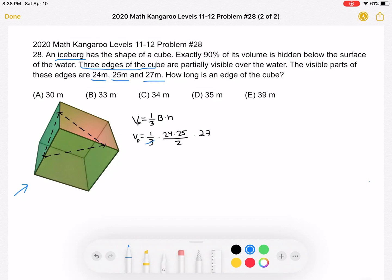So let's simplify. Divide by 2. So the volume of the pyramid is 12 times 25 times 9. And the volume of the pyramid is 10% of the total volume of the cube.